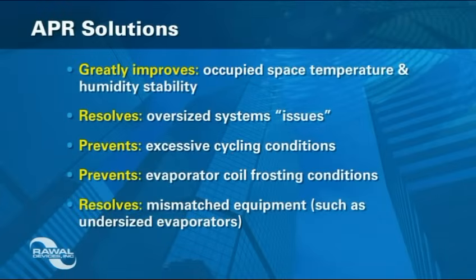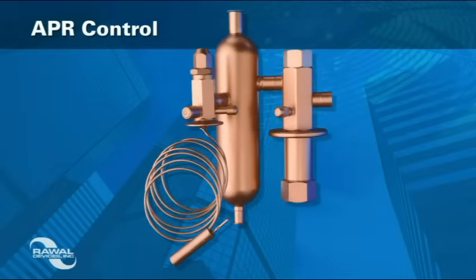As you have seen, the APR will enhance the control of DX air conditioning systems. It will extend their life expectancy two or more years by cutting cycling 30 to 60%. At partial load conditions, the electrical savings for the compressor can be as high as 12%. The APR Control has exceptional reliability.